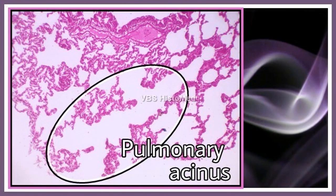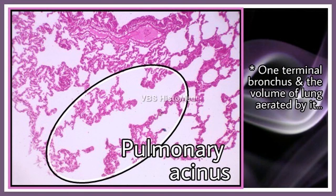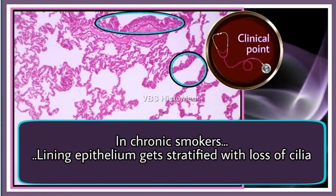From the terminal bronchiole downward — the respiratory bronchiole and the rest of the branching tree below it — the area supplied by one terminal bronchiole and all the respiratory bronchioles below it is called a pulmonary acinus. This is roughly a functional unit of the lung. You can actually see it on the surface of the lung as a small hexagonal lobule. The volume of lung aerated by one terminal bronchiole is a pulmonary acinus.